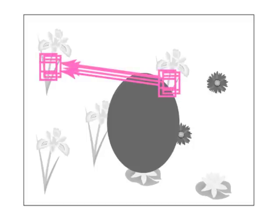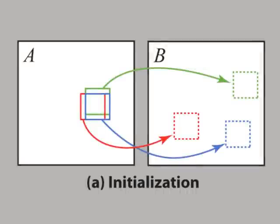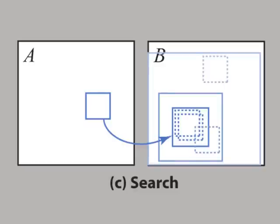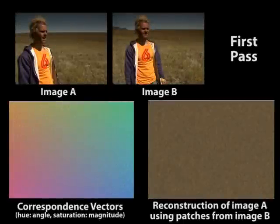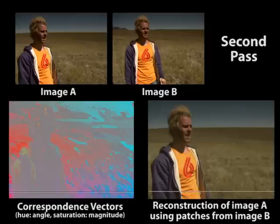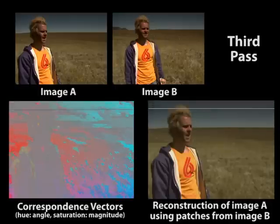Armed with these two observations, we begin with a random initial guess for the patch correspondences and iteratively improve the results. Our algorithm alternates between propagating good correspondences to neighboring patches and sampling the nearby image space to find even better correspondences. Although the initialization is completely random, a few lucky guesses propagate quickly to neighboring pixels in the propagation phase. The random sampling phase complements this greedy approach by helping to avoid local minima.